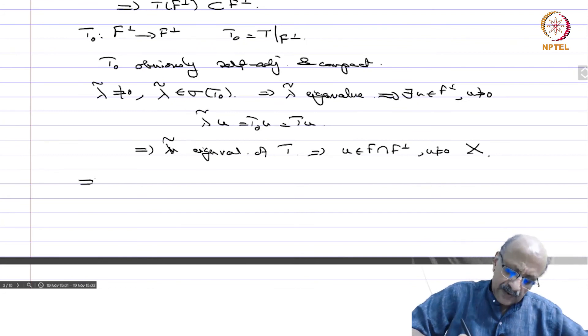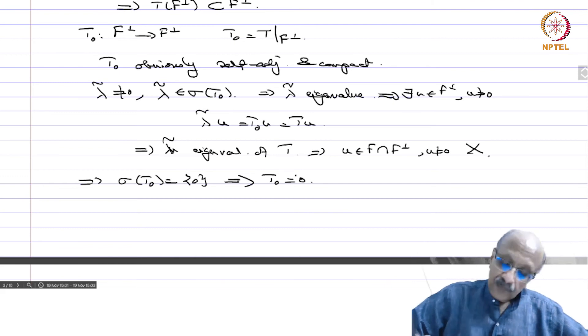So this implies that sigma of T_0 is singleton 0 and by our earlier corollary, we have that T_0 is in fact equal to 0.